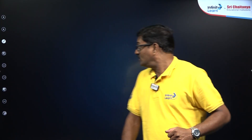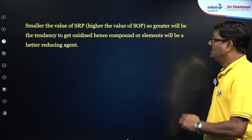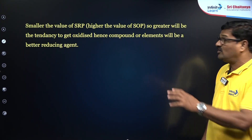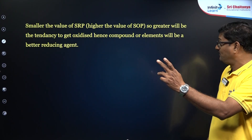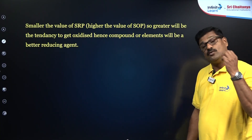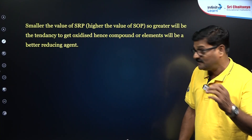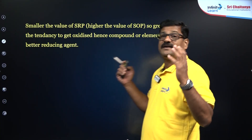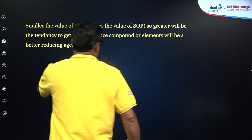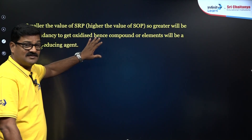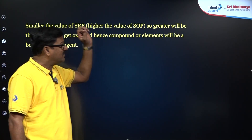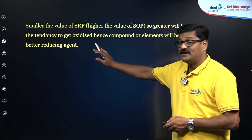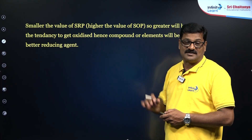Also, smaller the value of SRP and vice versa, higher the value of SOP. So the greater will be the tendency to get oxidized, and hence the element will be a better reducing agent.